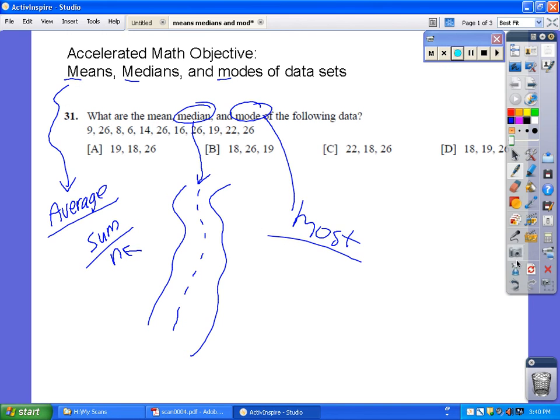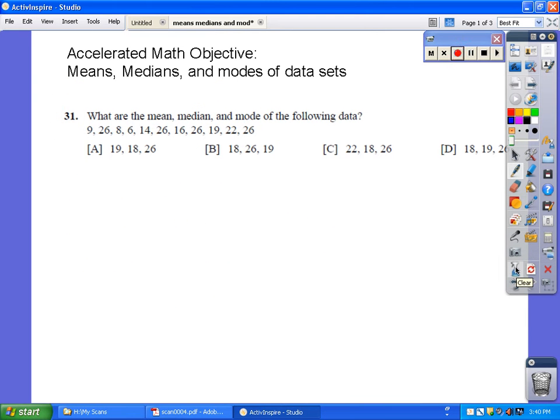Pretty reasonably easy stuff. To find the median, you need to get these things in order. So I'm just going to rearrange them: six, eight, nine, fourteen, sixteen, looks like nineteen, twenty-two. I had a bunch of twenty-sixes: one, two, three, four twenty-sixes.